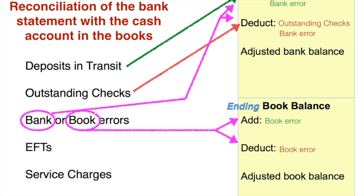EFTs are electronic fund transfers. Maybe the bank is collecting rent for you, or maybe they're automatically paying bills for you. You may know it's happening but not know exactly when, so when you get your bank statement that may be when you record the transaction. This is something the bank knows about but you don't necessarily have it in your books yet. Therefore these will be recorded on the book side and may be an addition or a deduction.